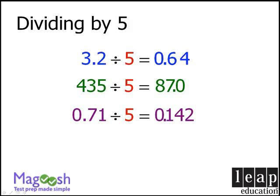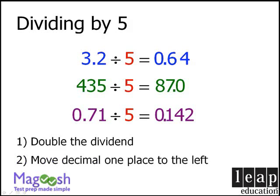So, to divide by 5, our first step is to double the dividend. And our second step is to take our decimal point and move it one space to the left.